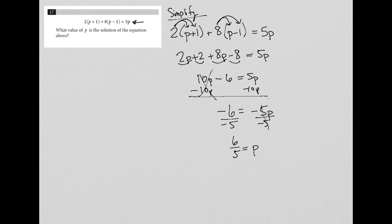The question asks: what value of p is the solution of the equation above? Well, we just found that — and typically that's what happens when we recognize the question is a simplify question. We can just go ahead and simplify, and usually the answer will be what the question is looking for. So our answer here is 6/5 — on your test, you just bubble in 6, then the divided-by bubble, then 5.